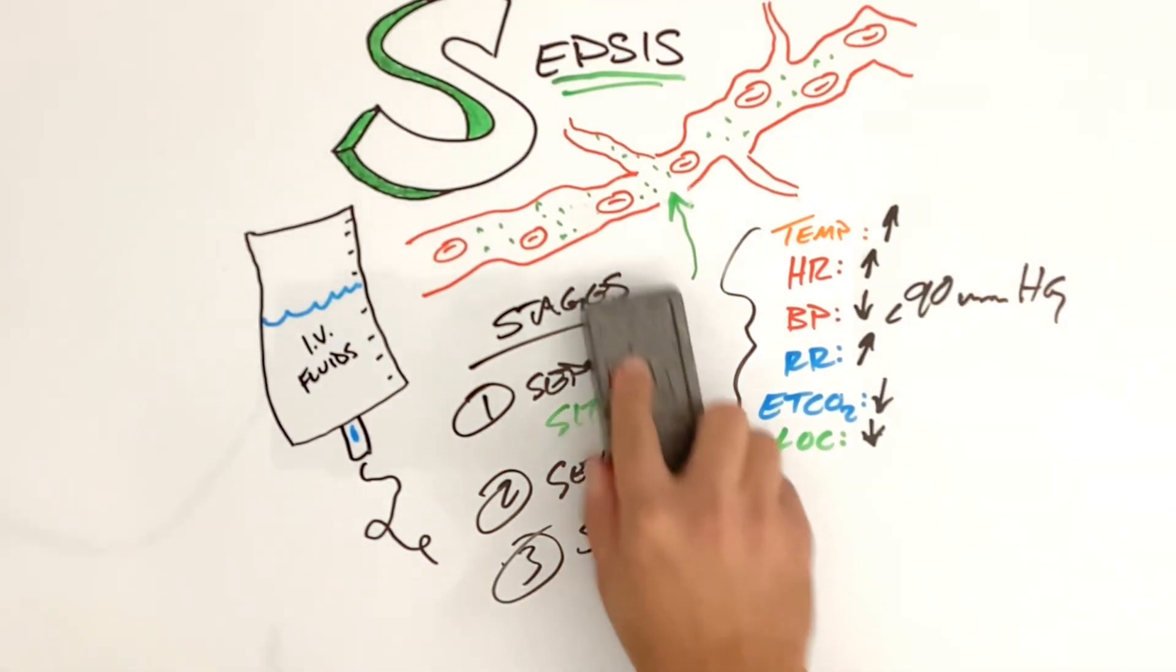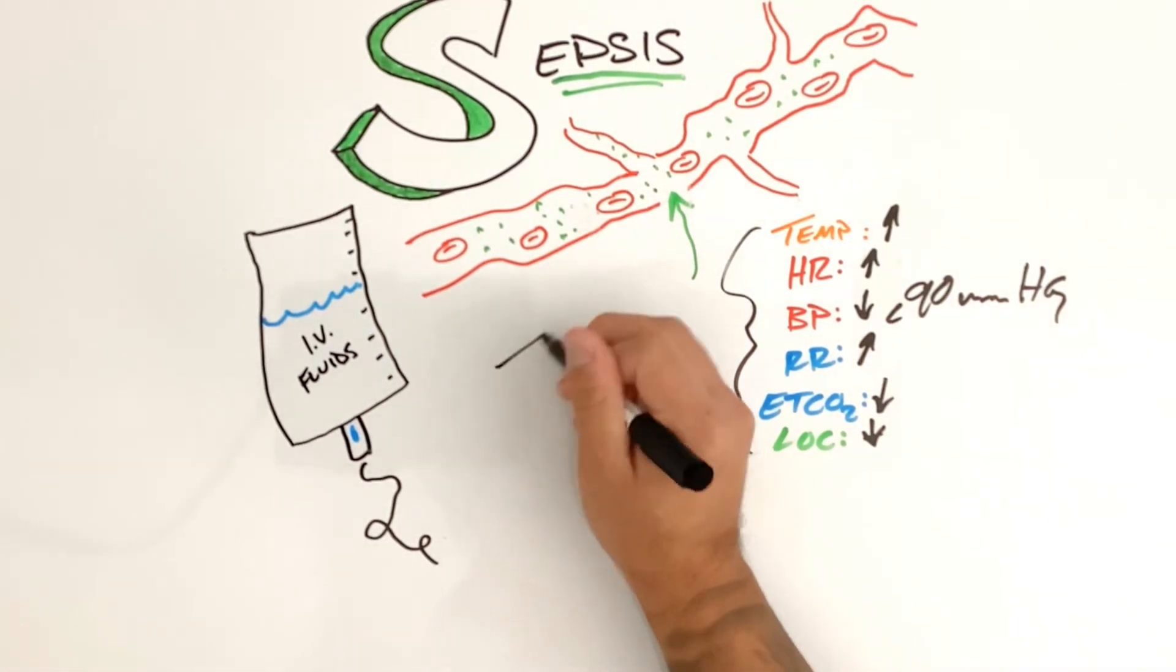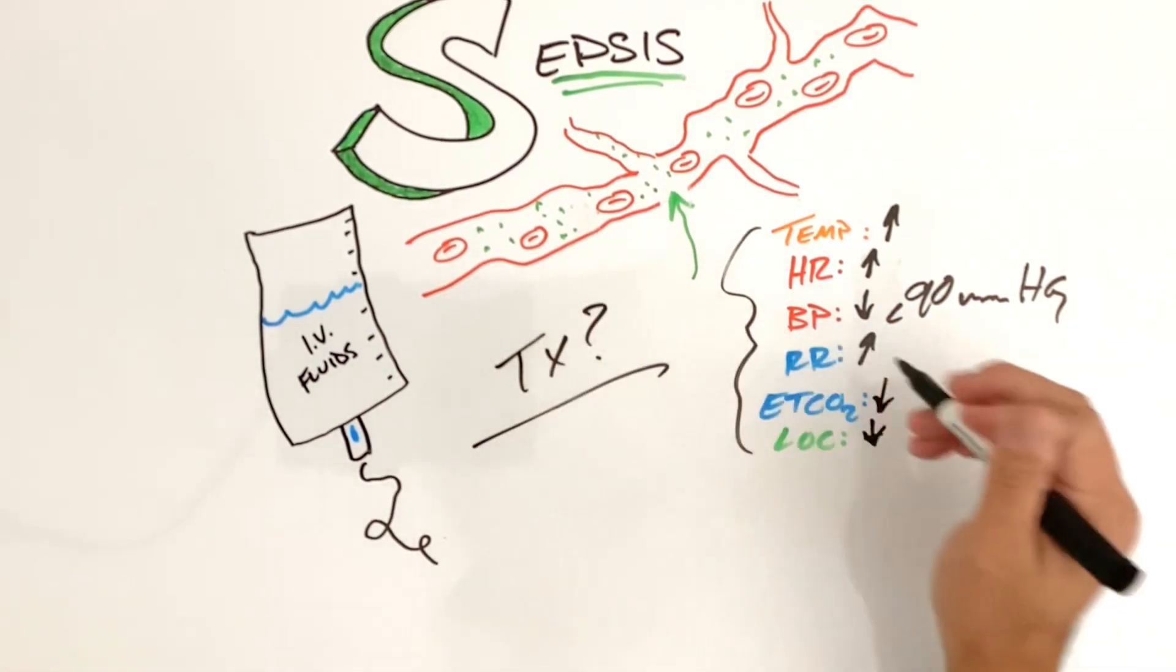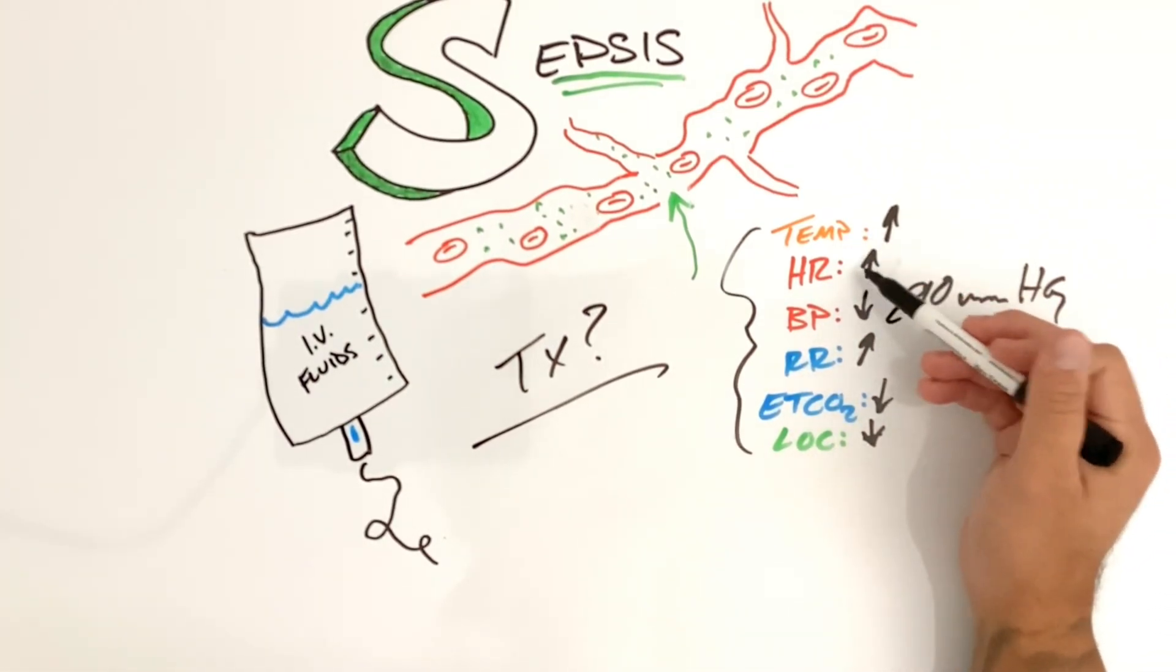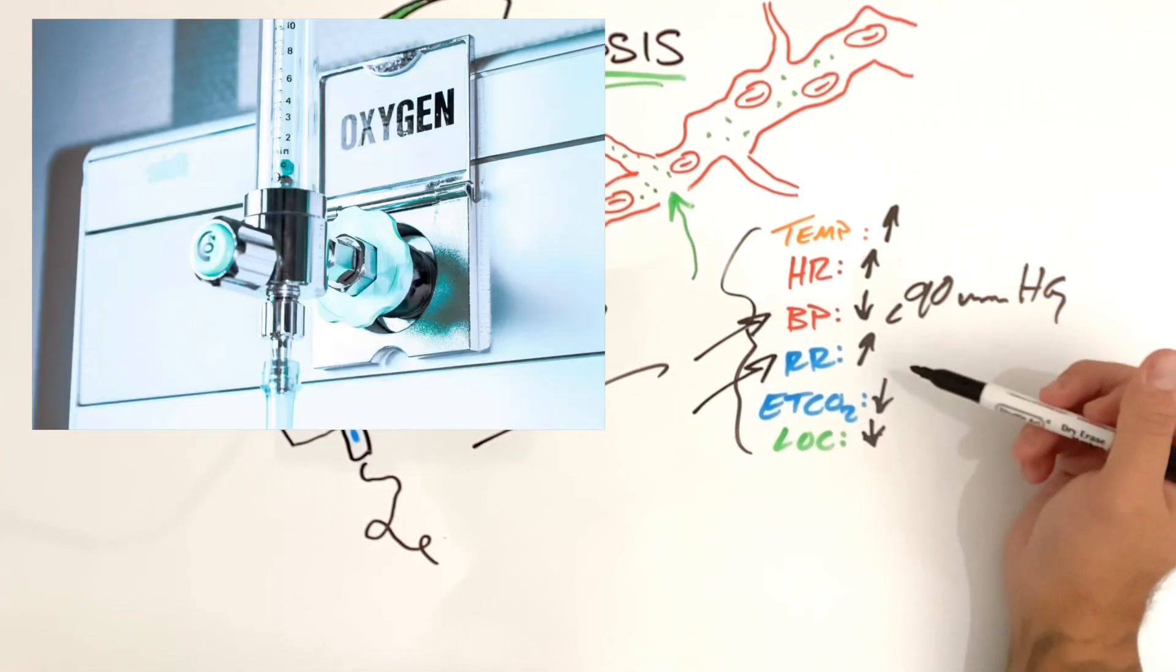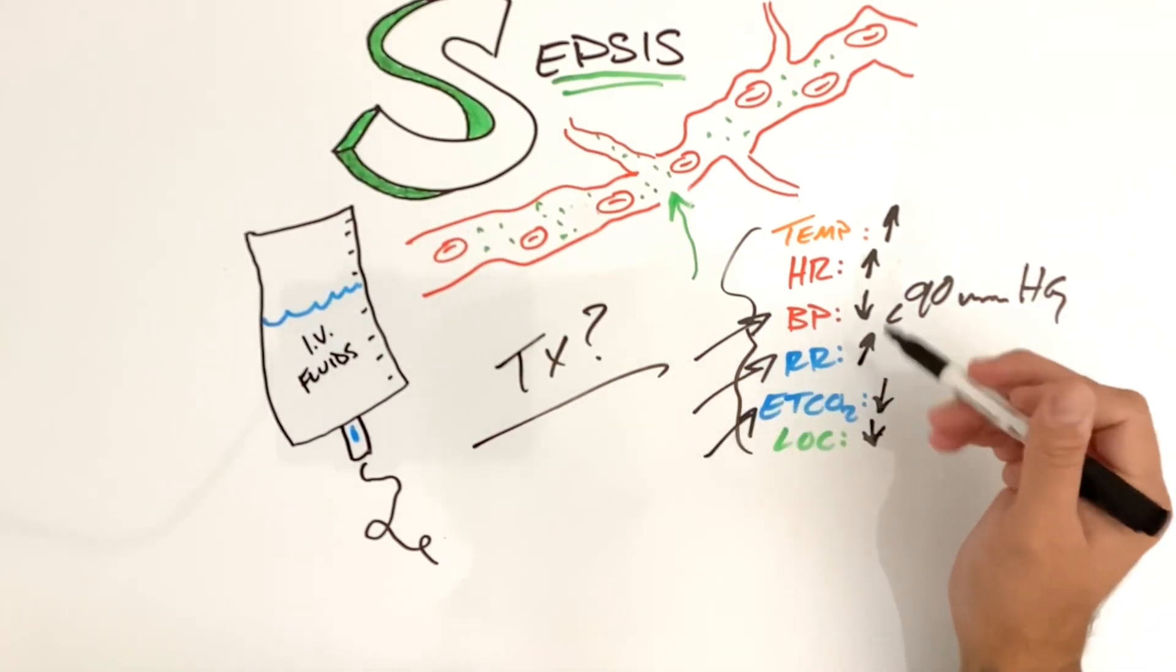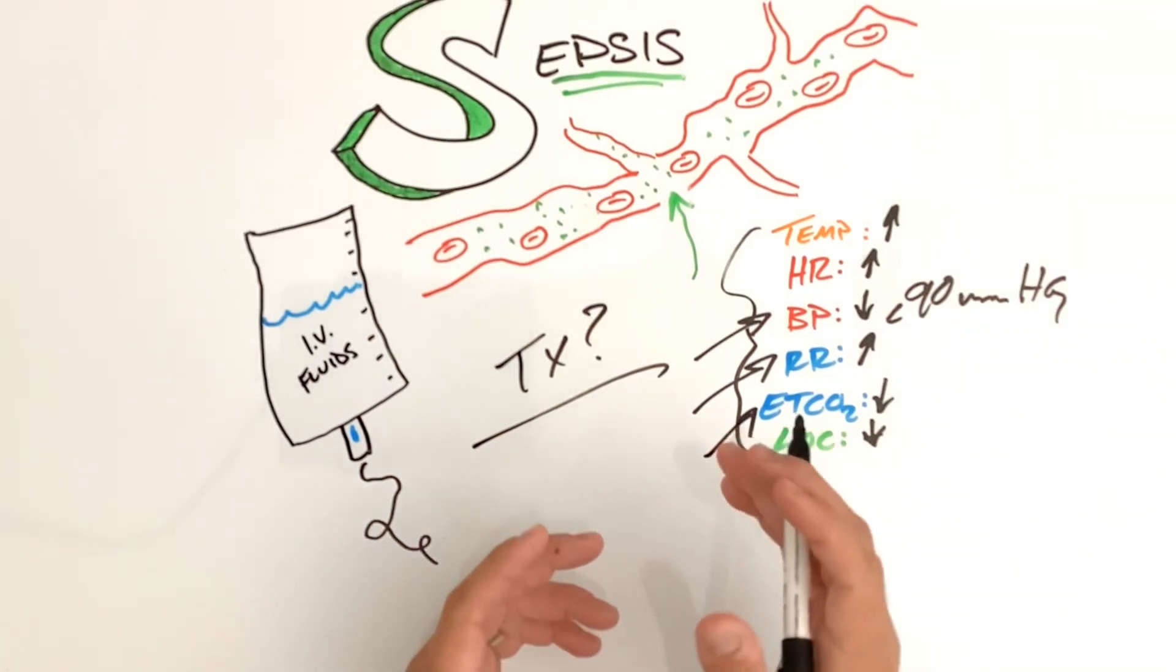So how are we going to treat our patients? What's our treatment like? Obviously we have a high temp, high heart rate. Our BP is dropping. We're going to try to fix that. Respirations, hopefully we've put them on supplemental oxygen if they are hypoxic or have some sort of dyspnea and then our end tidal CO2. So how are we going to treat these patients?